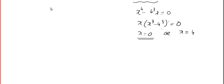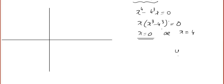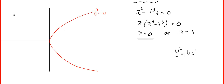Now we are ready for the picture. y² = 4x: the degree of y is 2 and degree of x is 1, so this is a parabola symmetric about the x-axis. The other parabola x² = 4y is symmetric about the y-axis. The point of intersection we just found is (4, 4).